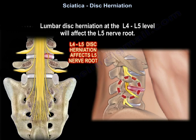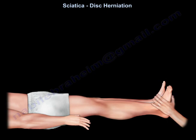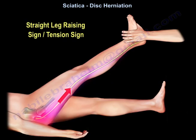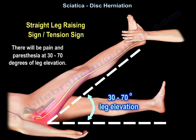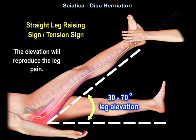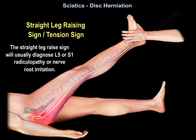The best examination for lumbar disc herniation is the straight leg raising sign, also called the tension sign. There will be pain and paresthesia at 30 to 70 degrees of leg elevation, reproducing the leg pain. The straight leg raise sign is typically used to diagnose L5 or S1 radiculopathy, or nerve root irritation.